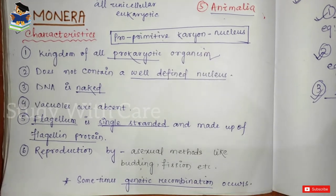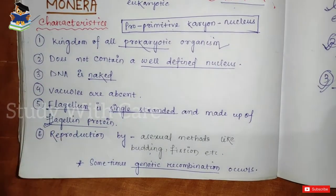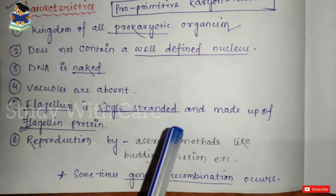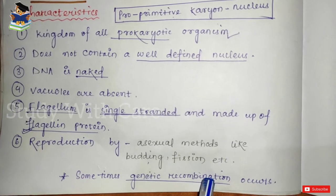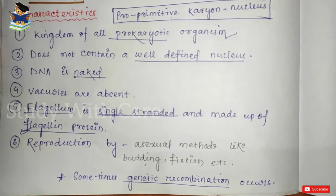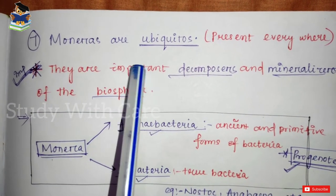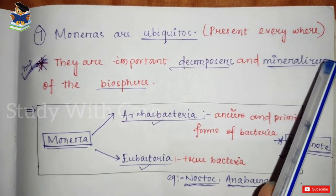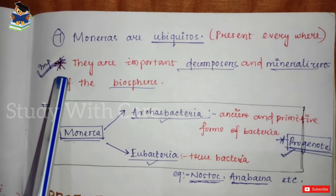Flagellum is present in Monera, and it is single-stranded — made up of a protein called flagellin. Reproduction is by asexual method, which includes budding, fission, etc. However, sometimes genetic recombination occurs, which is a primitive form of sexual reproduction found in most bacteria. Monerans are ubiquitous — meaning they are present everywhere. This is an important point that may come in your examinations.